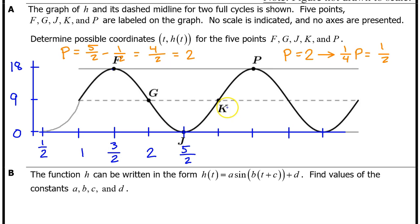Well, we still need the input values for k and p. So, let's keep counting. This is 5 halves. This will be 6 halves, which reduces to 3. And this will be 7 halves. We now have all of the input values and the output values for the 5 points.